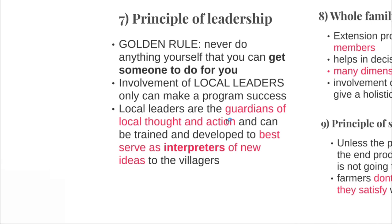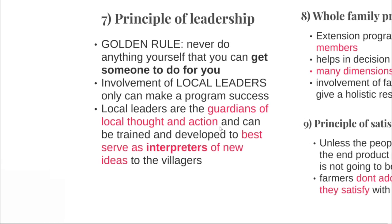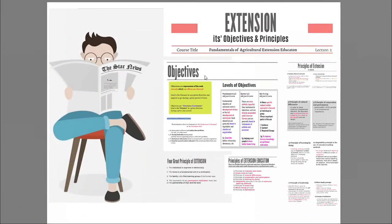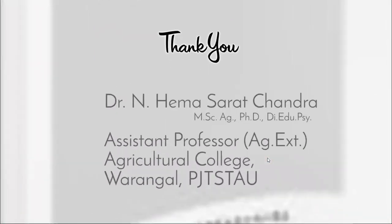Extension work must involve all family members — youth, women especially — along with the farmers. Principle of satisfaction: unless the people are satisfied with the end product of any program, it is a failure. Farmers don't adopt anything unless they are satisfied with the end product. So, we have realized what objectives are, what the objectives of an extension are, and what the levels of objectives are. Along with that, we covered the four great principles of extension and various principles of extension work. Thank you.